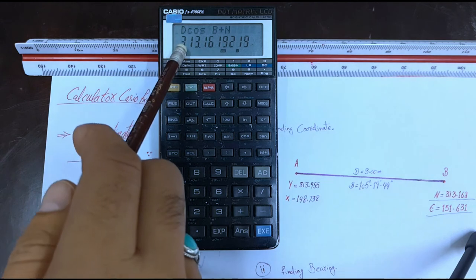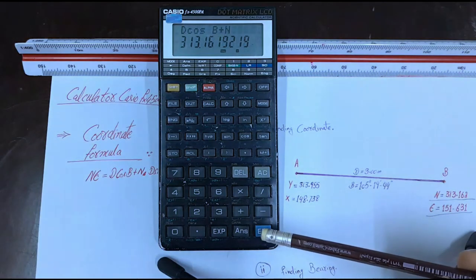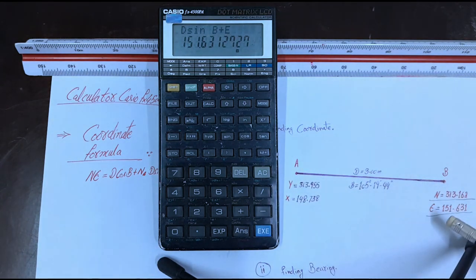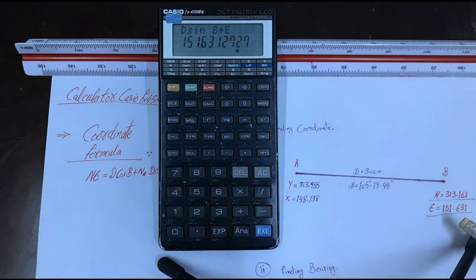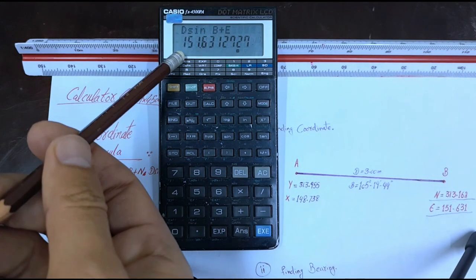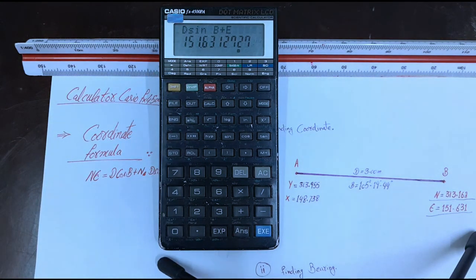Let's see. Northing: 313.162. Easting: 151.631. That's it. Okay, thanks for watching this video.